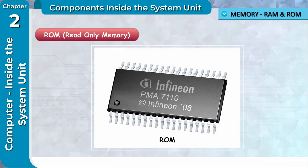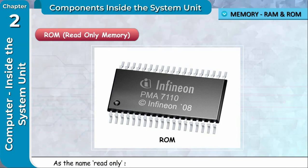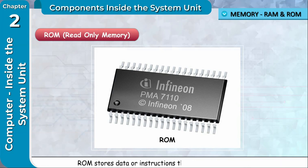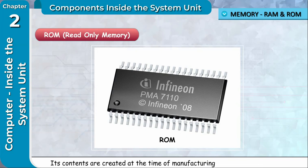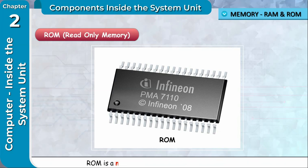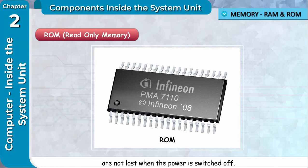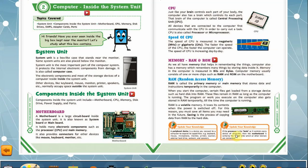ROM (Read-Only Memory) is the read-only memory from which information can only be read. As the name suggests, the data on ROM chips cannot be modified. ROM stores data or instructions that need to be permanent — its contents are created at the time of manufacturing and cannot be changed. It helps the computer to get started. ROM is a non-volatile memory, meaning its contents are not lost when the power is switched off.